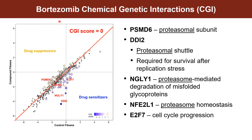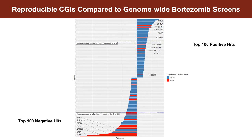Here I'm showing the CGI hits from our targeted bortezomib screen. As a sanity check, it's good to look at the positive side first — you expect to see the drug's target show up here. That is, if you knock out the target of the drug, you would be suppressing the fitness effect of the drug. Looking at our top positive hit, PSMD6, this is the only proteasomal subunit in our library, and that makes sense. On the negative side, the hits that you're picking up are sensitizing to the bortezomib drug. It's interesting to see that the top three hits — DDI2, NGLI1, and NFE2L1 — are all involved in proteasomal processes.